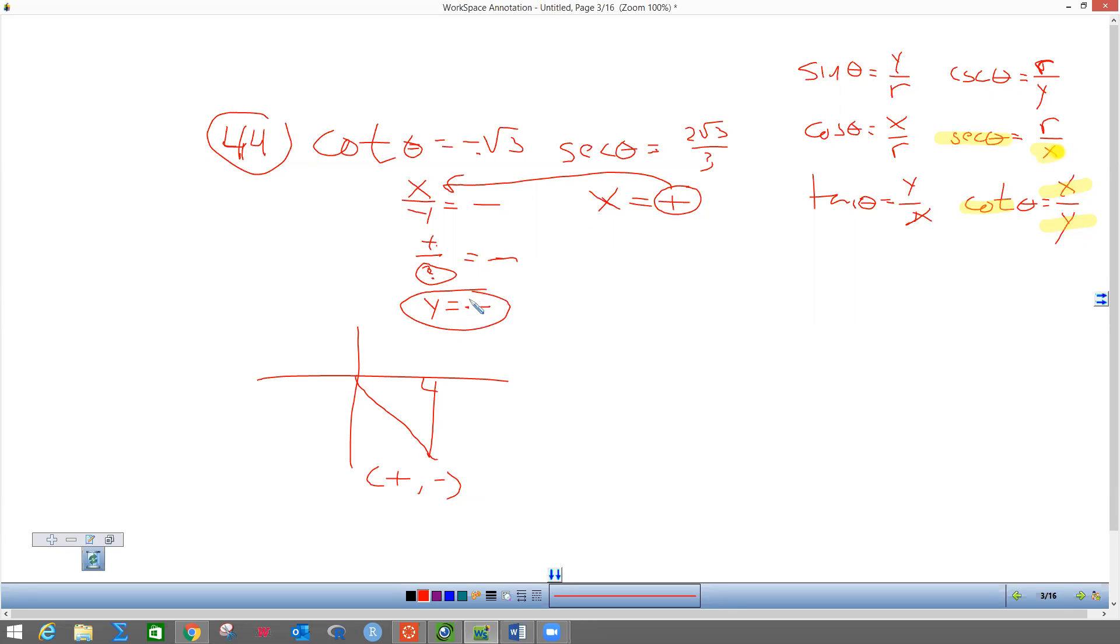Now I know cotangent is negative radical 3 over 1, so I'm going to make this—oh sorry, X is negative radical 3. So this is negative radical 3, and Y is 1 because this is over 1.